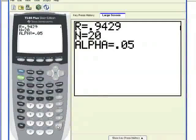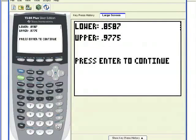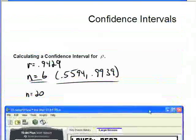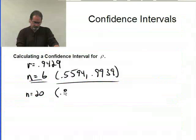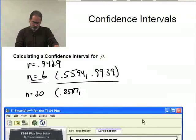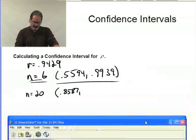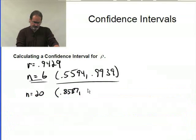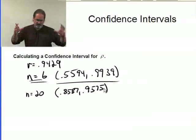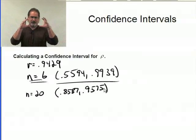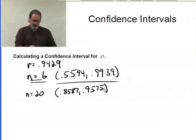So this is a 95% confidence interval. Now it's .85 to .975, so .8587 all the way to .9575. See the interval now is getting much, much tighter. .85 is pretty strong, .95 is very strong.